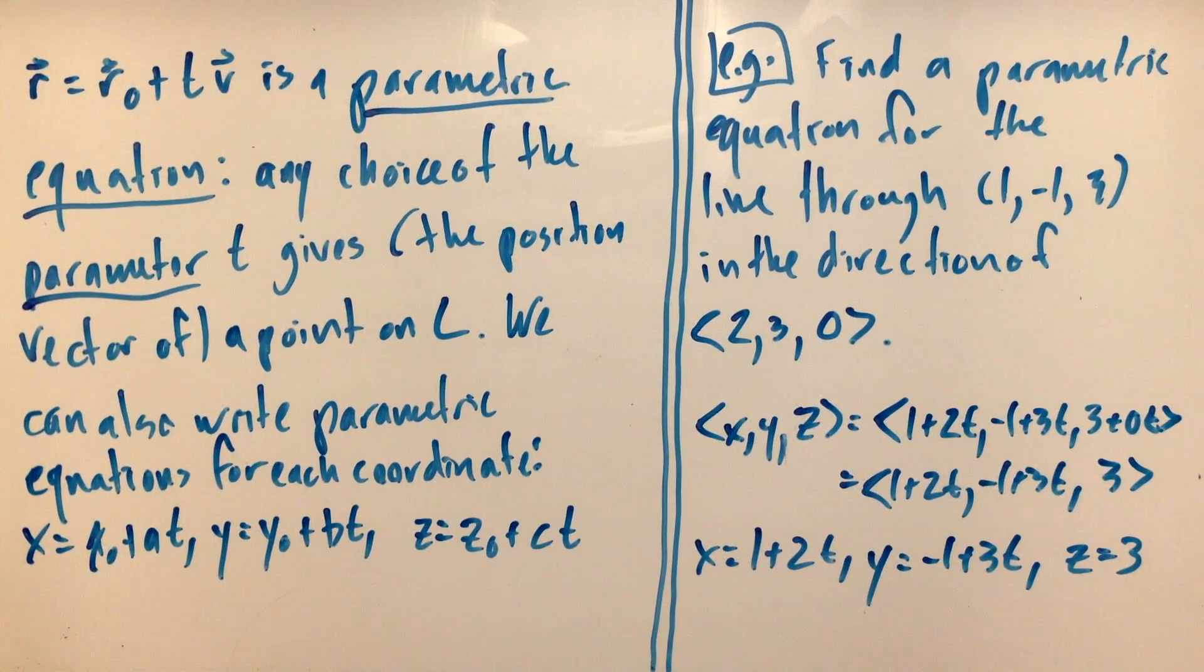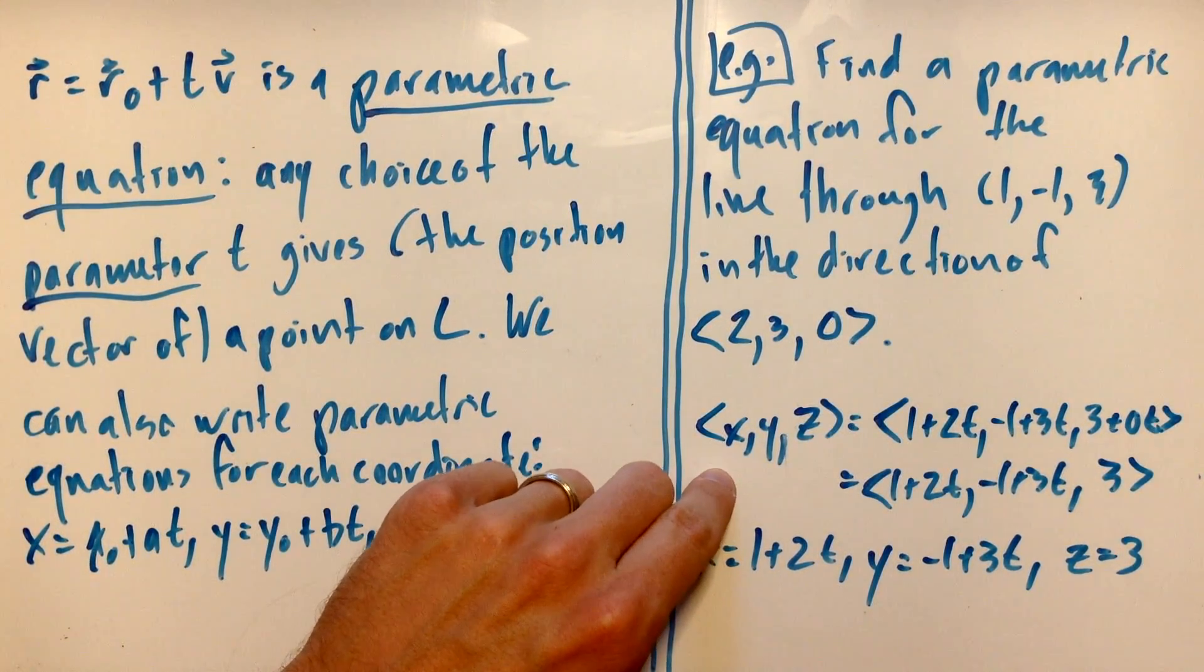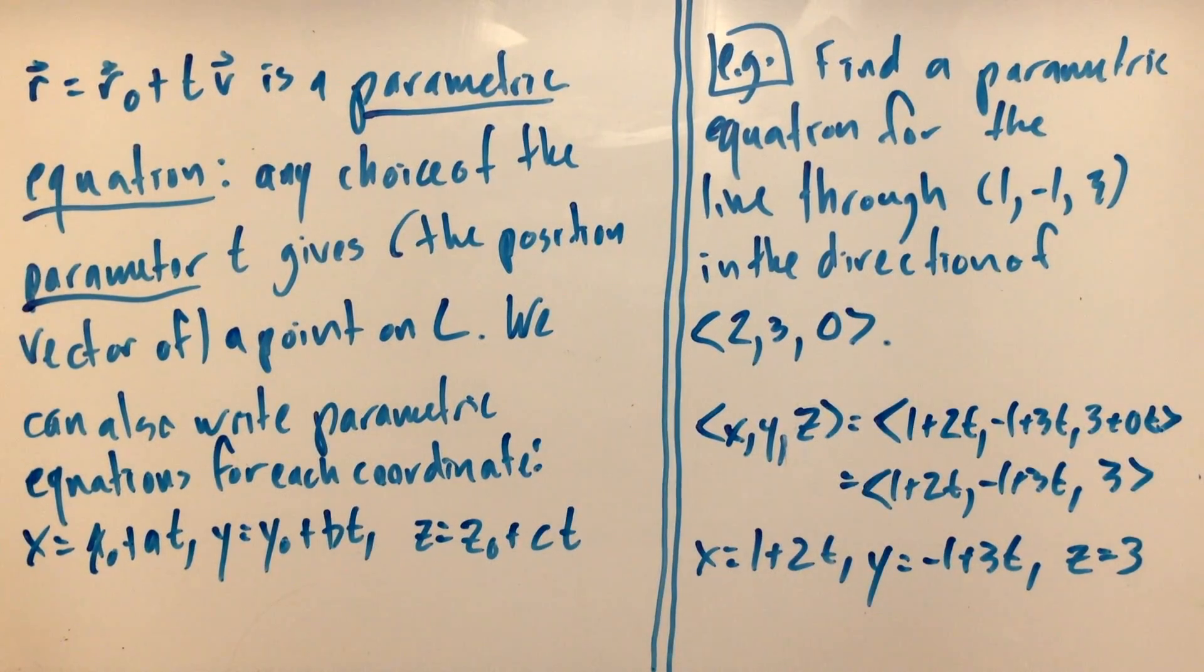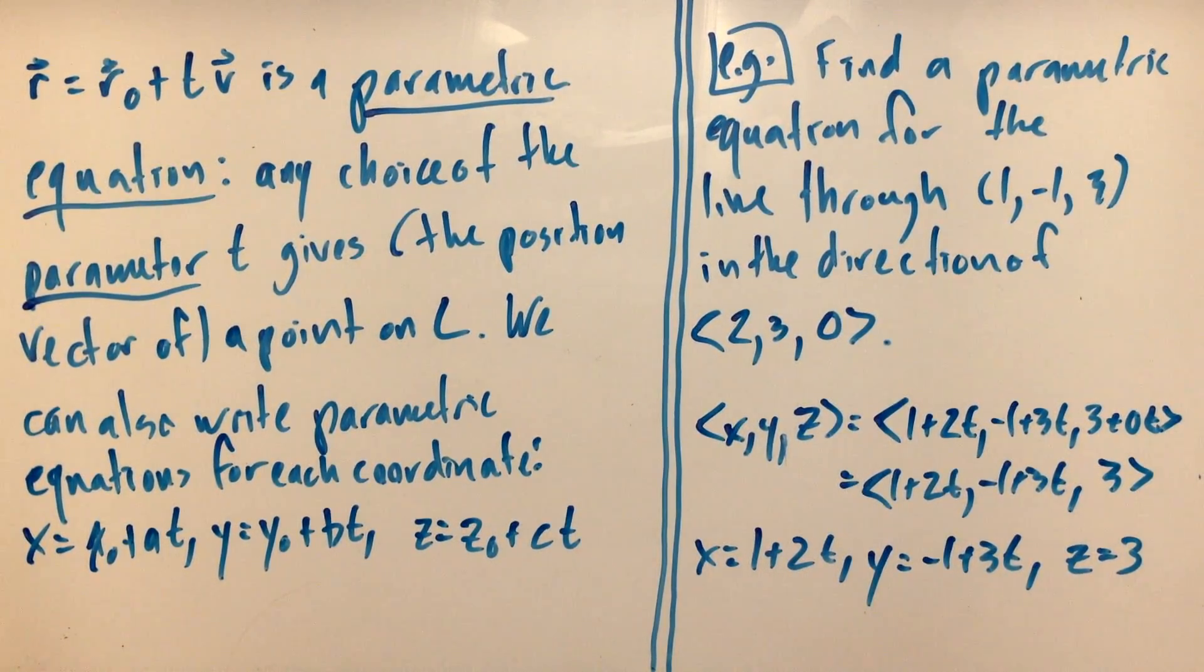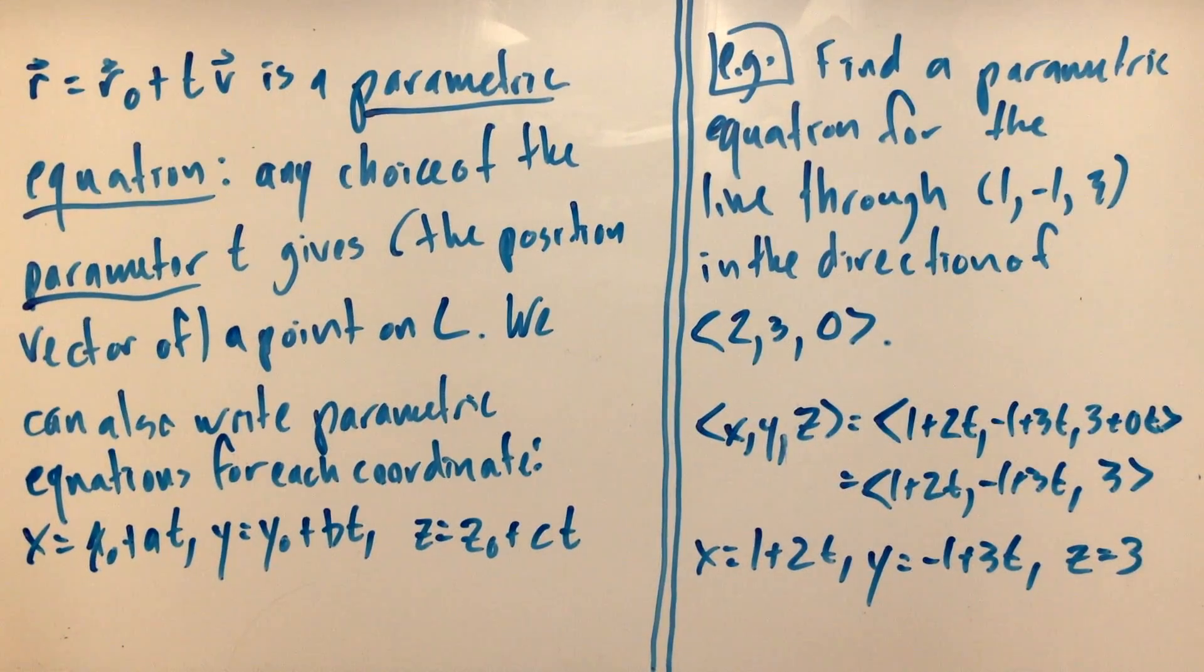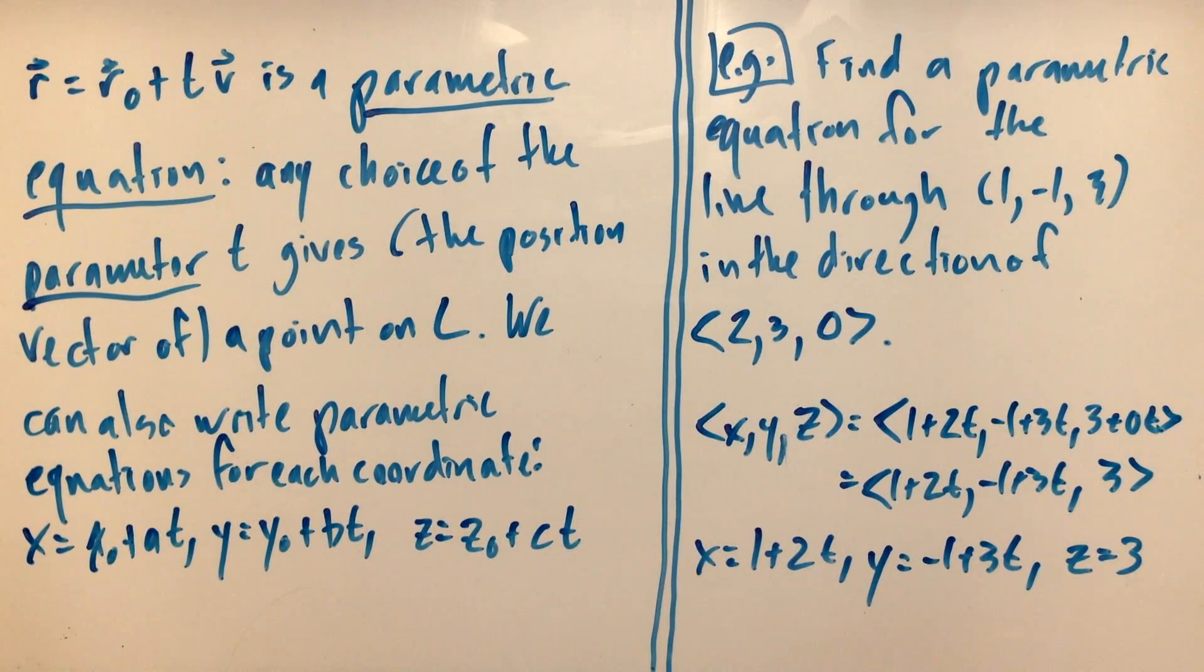For example, let's find a parametric equation for the line that goes through the point (1, -1, 3) in the direction of (2, 3, 0). If we want to do this as a vector equation, we have (x, y, z) = (1 + 2t, -1 + 3t, 3 + 0t), which simplifies to (1 + 2t, -1 + 3t, 3). If we write this out in terms of equations for each coordinate, we get x = 1 + 2t, y = -1 + 3t, and z = 3.